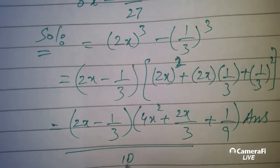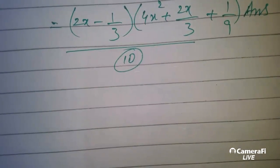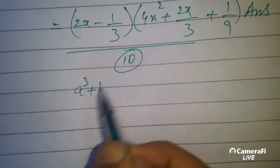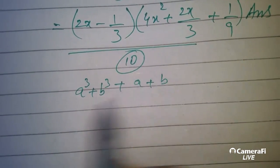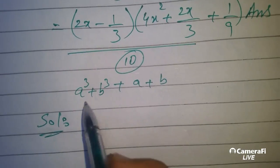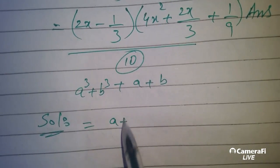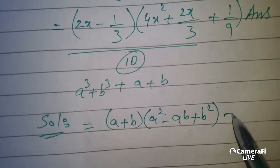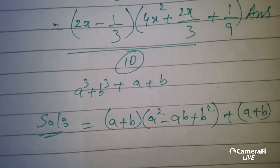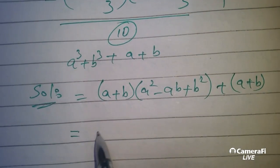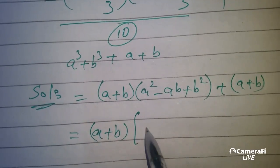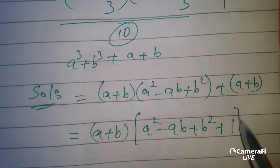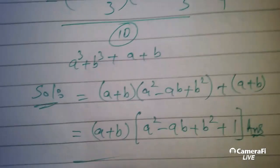Question number 10: a cubed plus b cubed plus a plus b. We get a plus b, times a squared minus ab plus b squared, and a plus b. Taking a plus b as a common factor: a plus b, times a squared minus ab plus b squared plus 1. And the question is over.